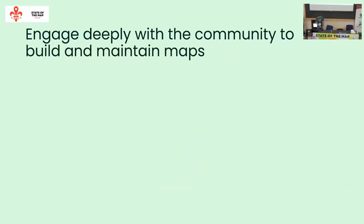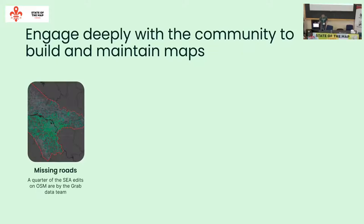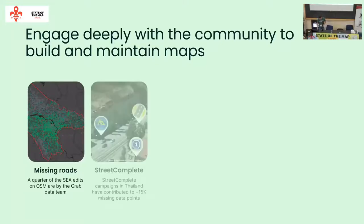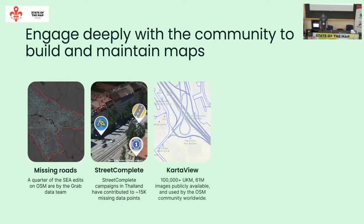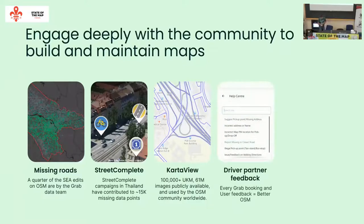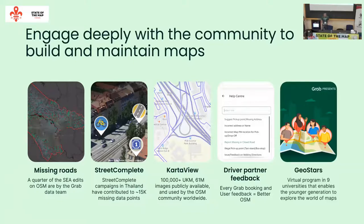How do we engage deeply with the community to build and maintain maps? First, missing roads — a quarter of Southeast Asia edits on OSM are by the Grab data team. Second, StreetComplete campaigns in Thailand have contributed close to 15,000 missing data points. Third, we have our imagery — KartaView — with over 100,000 360-degree images publicly available and used by the OSM community worldwide. Fourth, driver partners provide feedback and contribute back to OSM. And finally, we have our GeoStars program — a virtual program in nine universities enabling the younger generation to build the entire end-to-end mapping system.